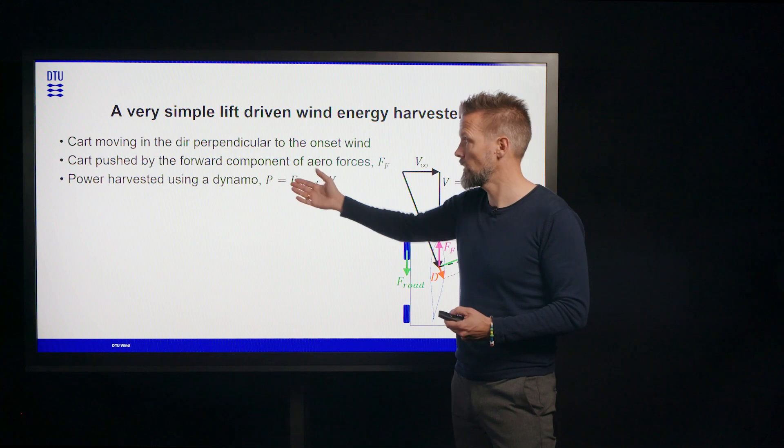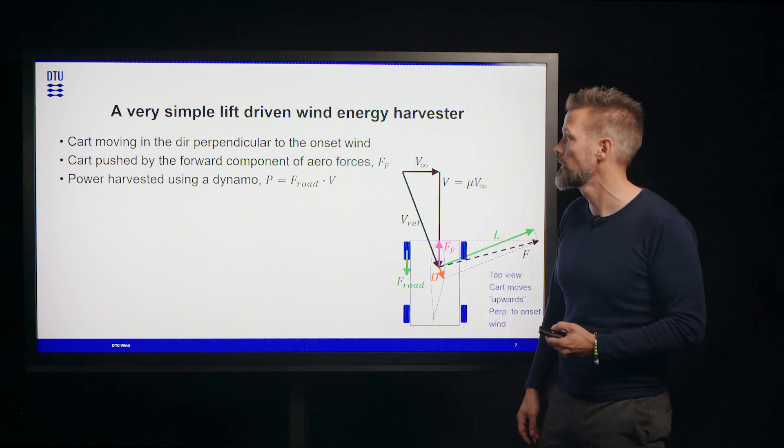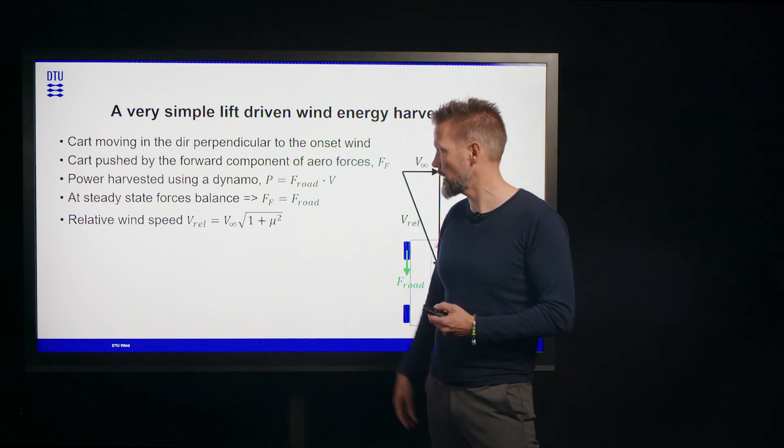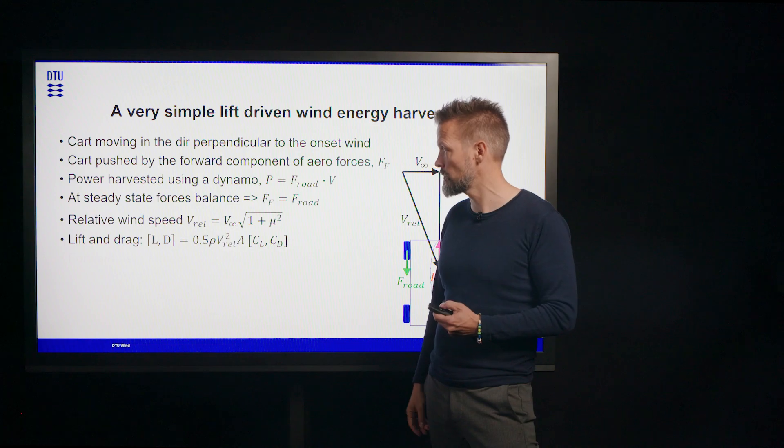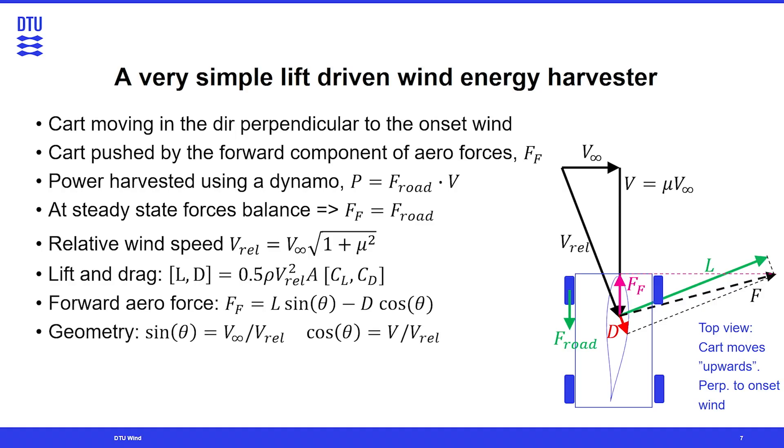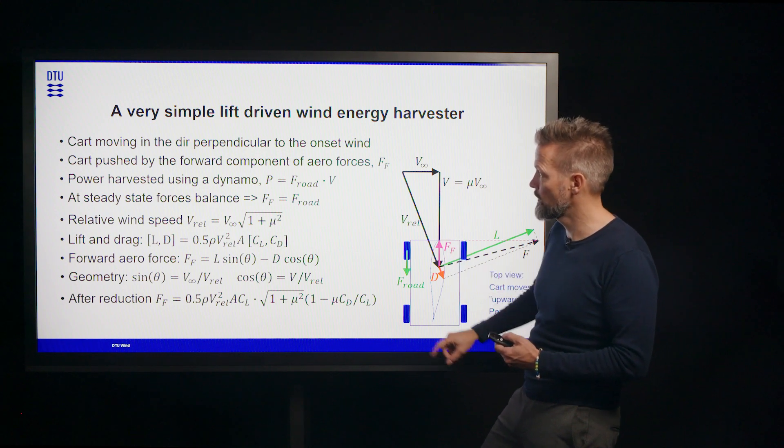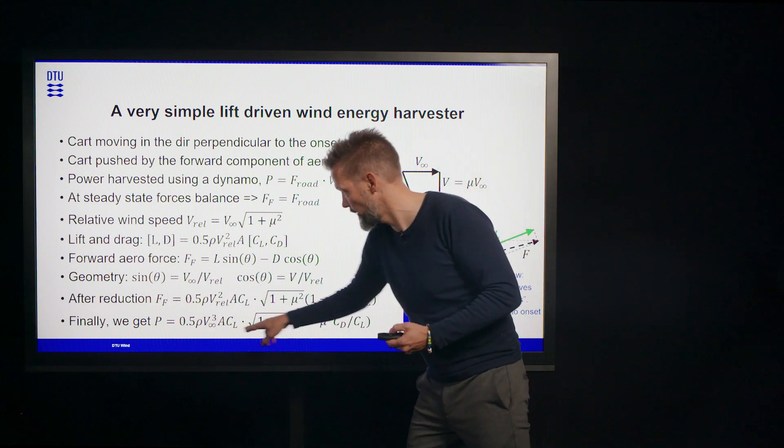And like the other cart, we harvest power using the dynamo on the wheels. And again, the forces should balance at steady state. The relative wind speed is calculated with Pythagoras. And lift and drag are determined with the equations from before. So with a bit of geometry, we can put everything together and then get the total force, this force. And then we can use that to calculate the power. And then this is this lengthy equation.